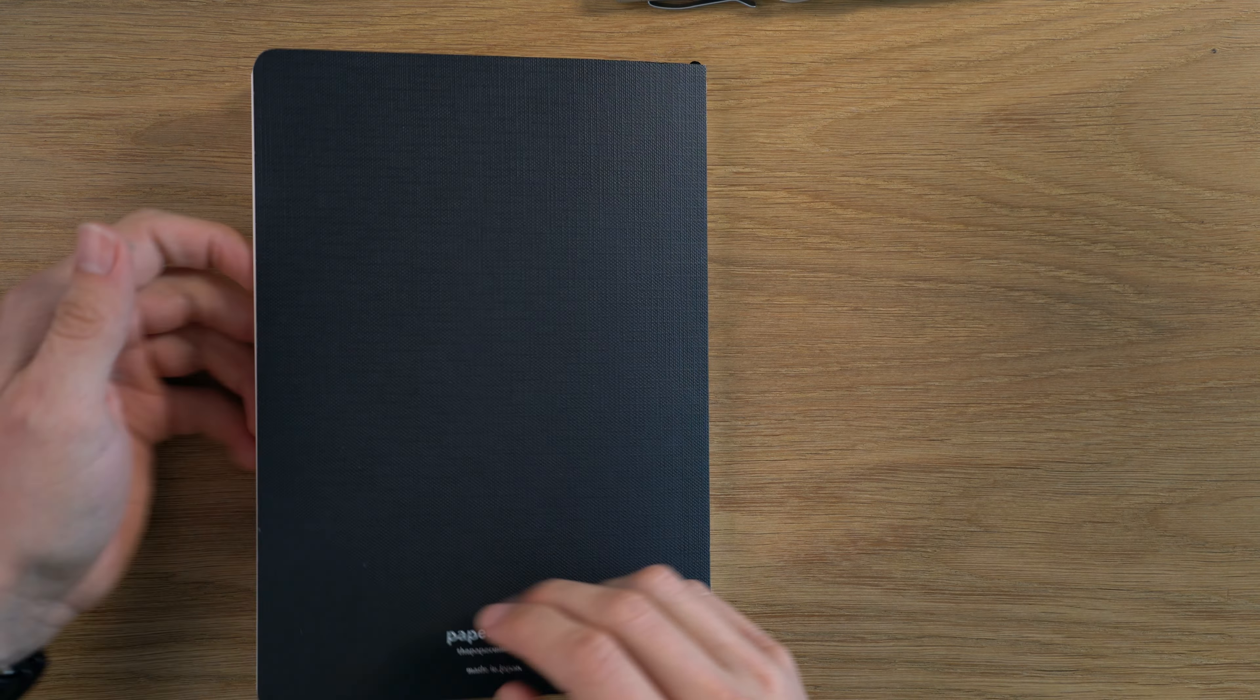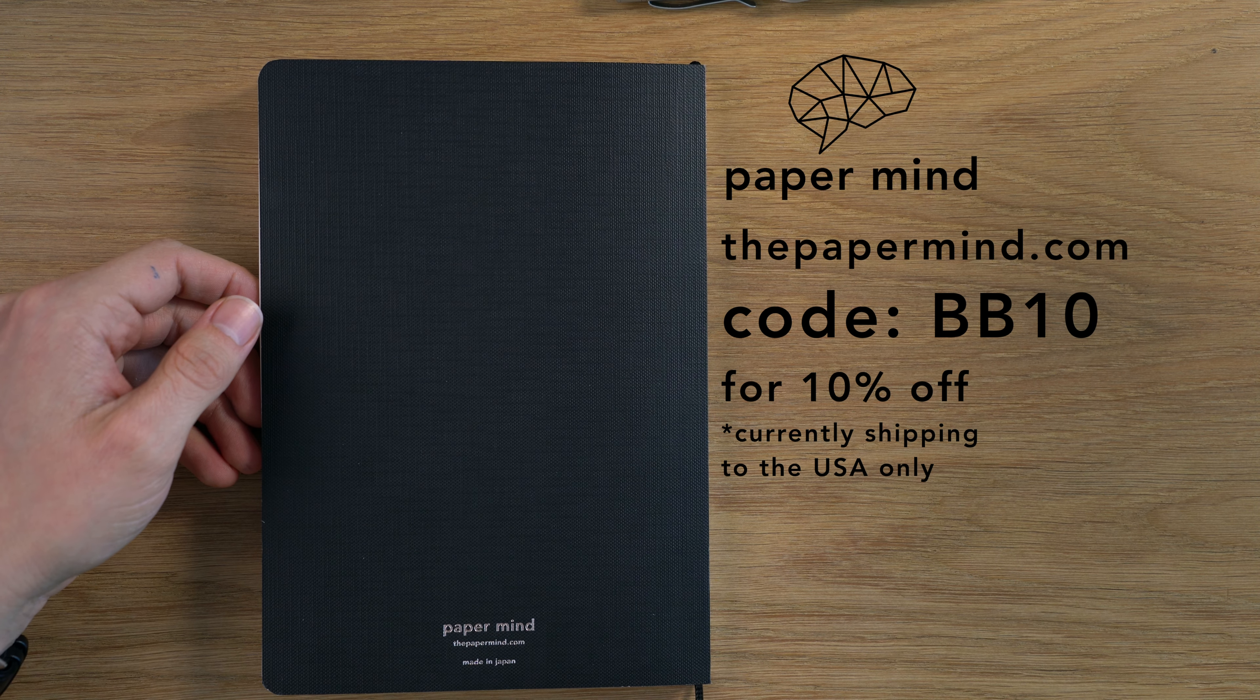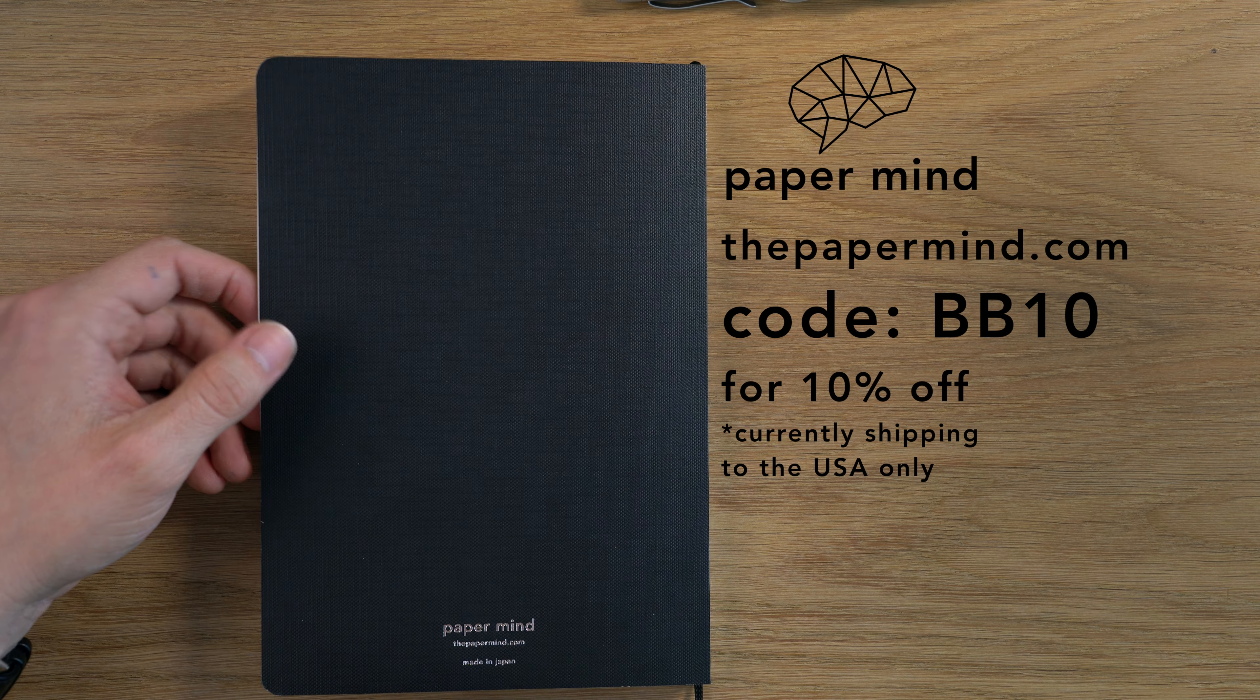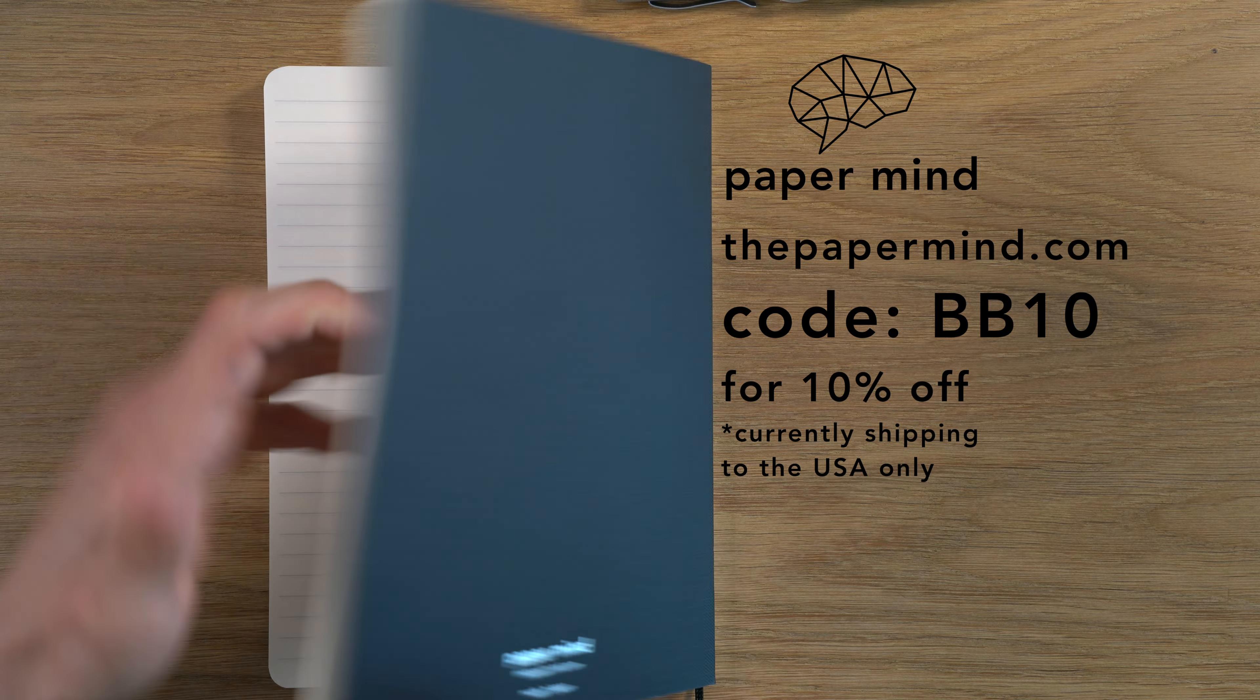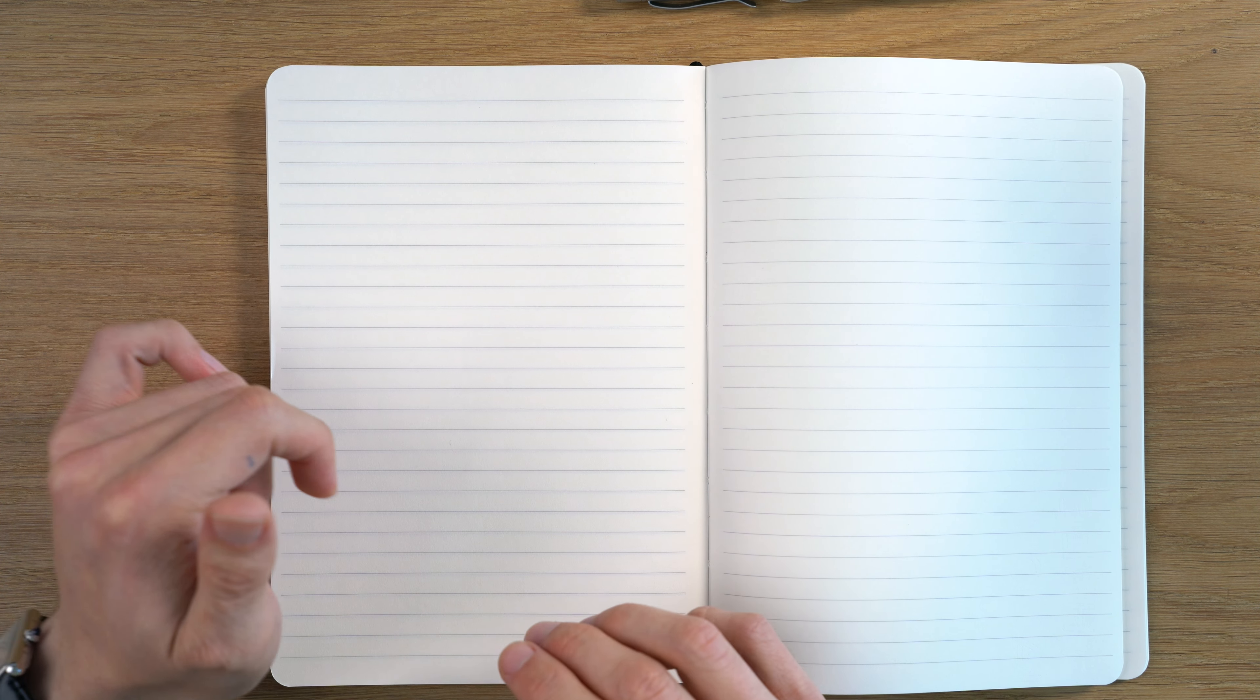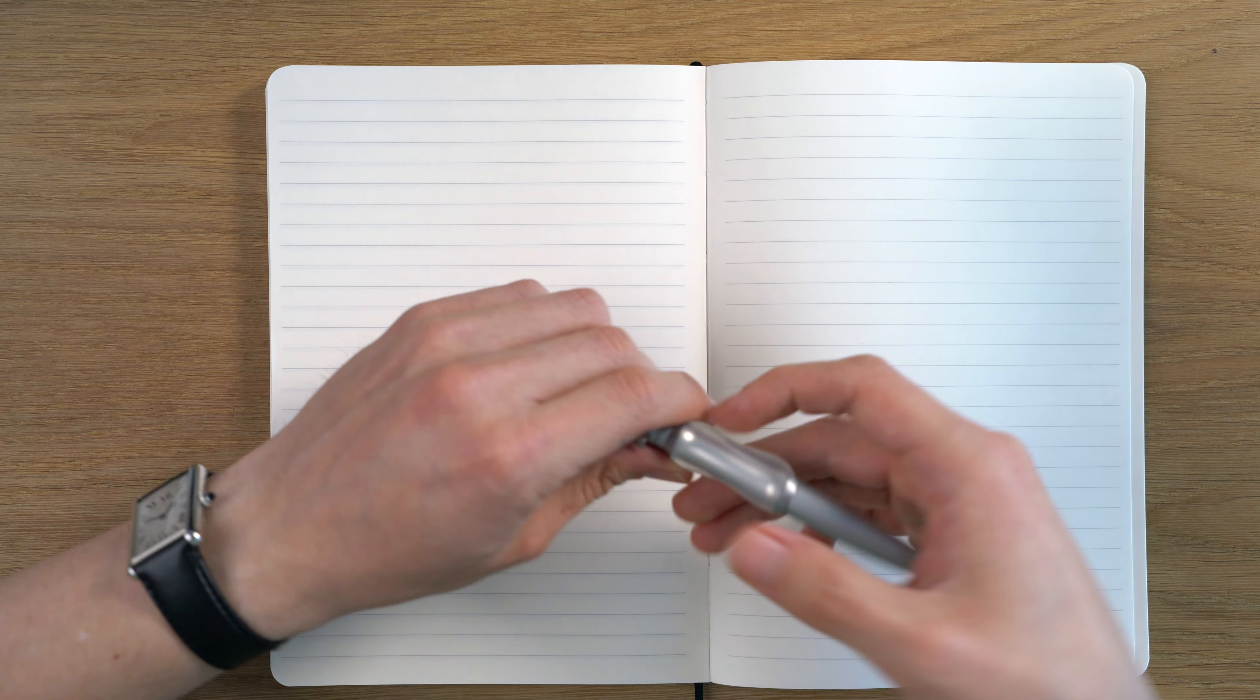Before we do the writing sample, I'm doing this on Paper Mind Mitsubishi Bank Paper Notebook. This is my own brand of notebooks, and for Blake's Broadcast subscribers, I'm giving 10% off. You can use code BB10 at thepapermind.com. Okay, let's get on to the writing sample.